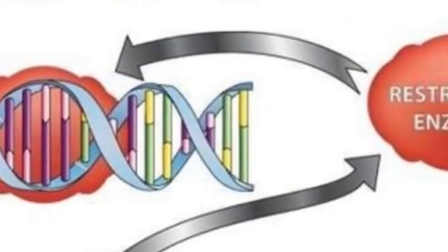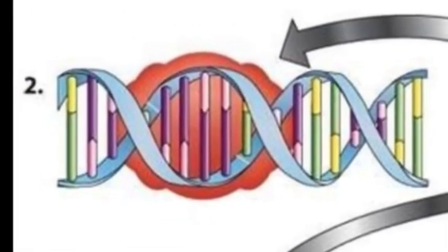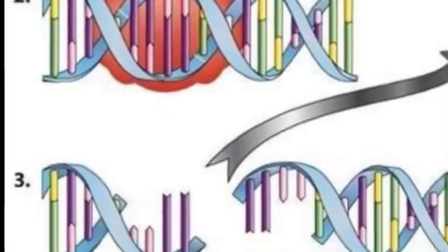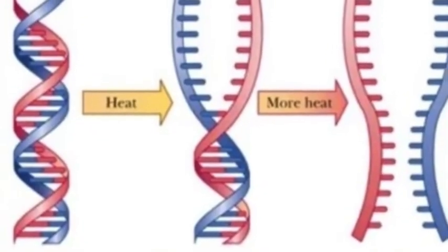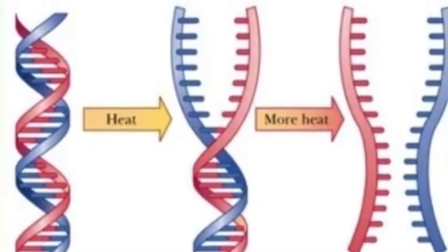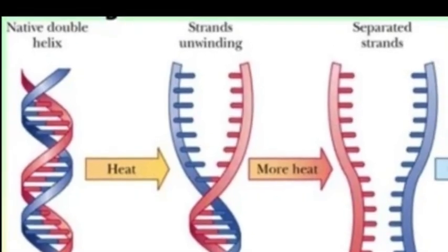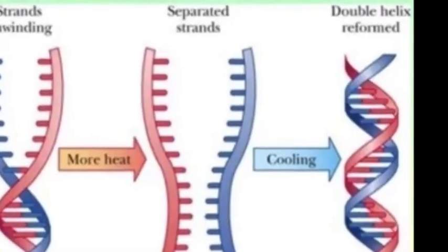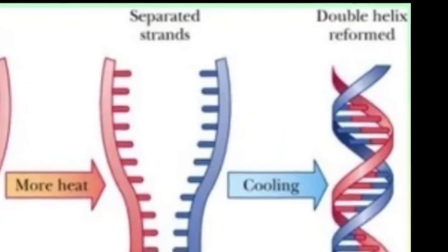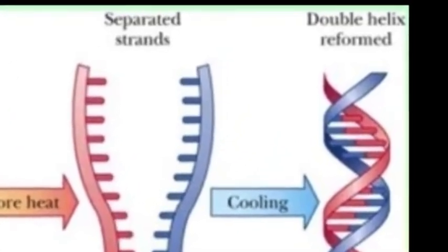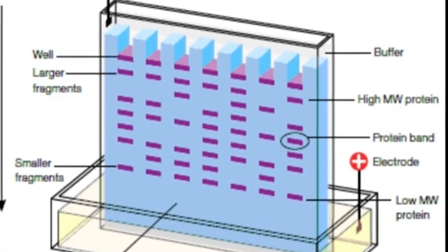Restriction enzymes recognize a specific sequence of DNA called the restriction site — this is where the enzyme will cut the DNA strands. Denaturation is when conditions such as heat or strong chemicals cause DNA to untwist and split into single strands. Hybridization is when single-stranded segments of DNA or RNA are mixed together under the right conditions.